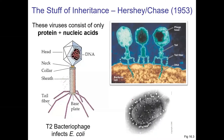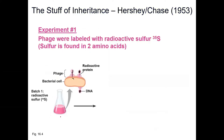Alfred Hershey and Martha Chase were working with viruses called bacteriophage — meaning 'eaters of bacteria.' These little viruses look like lunar landers. Importantly, a virus only has two types of macromolecules: proteins and nucleic acids — no carbohydrates or lipids. They used radioactive chemicals: isotopes of sulfur and phosphorus. In the first experiment, they used radioactive sulfur-35, which is found in amino acids but not at all in DNA, giving radioactive proteins and non-radioactive DNA in the viruses.